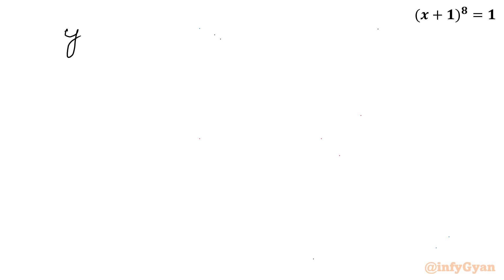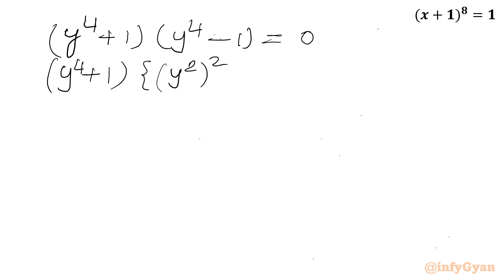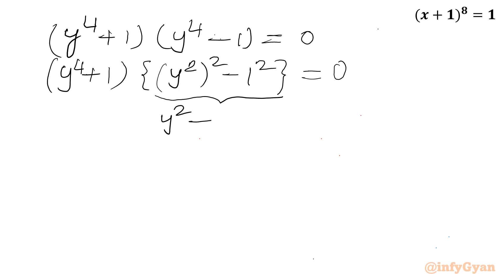So we have (y^4 + 1)(y^4 - 1) = 0. We keep y^4 + 1 as it is, and rewrite y^4 - 1 as (y²)² - 1². Applying the difference of squares formula again gives (y^4 + 1)(y² + 1)(y² - 1) = 0.